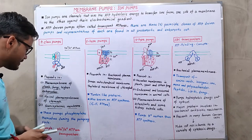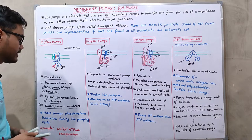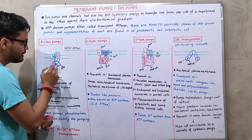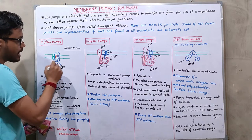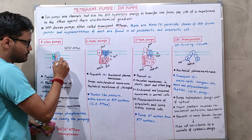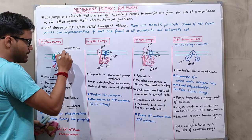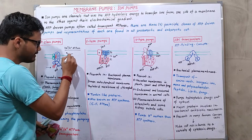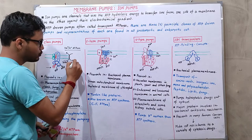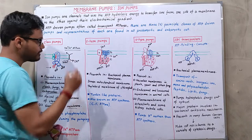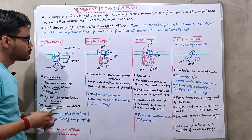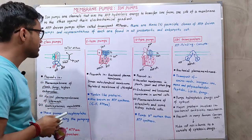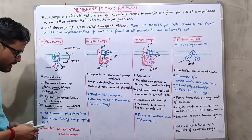P-type pumps phosphorylate themselves during the pumping cycle. Using this phosphate-derived energy, they transport three sodium ions out from inside the cell and bring two potassium ions back inside the membrane. Essentially, these pumps work against the concentration gradient of the ions.